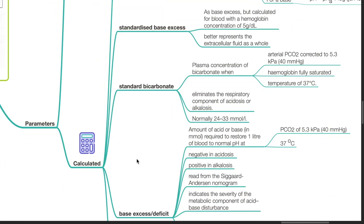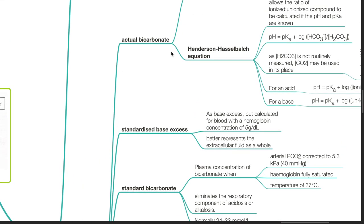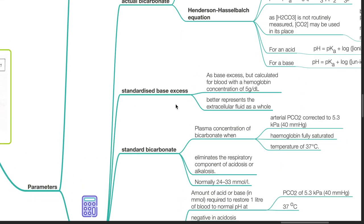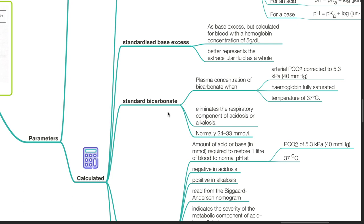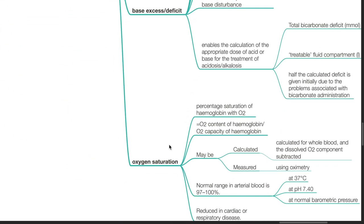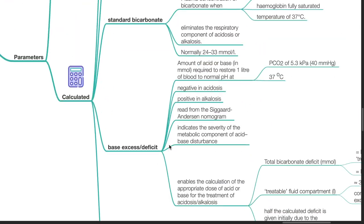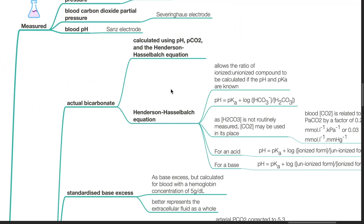Parameters that are calculated include actual bicarbonate, standardized base excess, standard bicarbonate, base excess or base deficit, oxygen saturation, etc. Actual bicarbonate is calculated using pH, pCO2, and the Henderson-Hasselbalch equation.